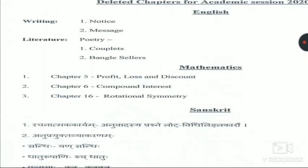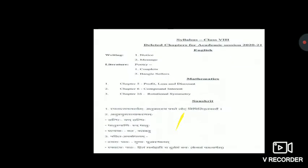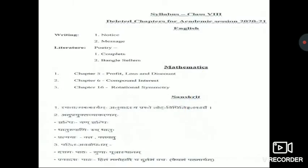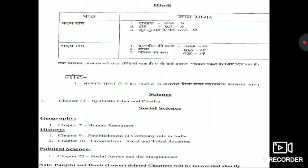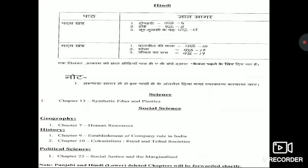In Mathematics, Chapter 5 Profit, Loss and Discount, Chapter 6 Compound Interest, and Chapter 16 Rotational Symmetry are deleted. In Sanskrit, three chapters from the grammar section are also deleted.